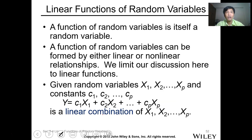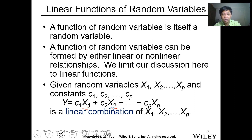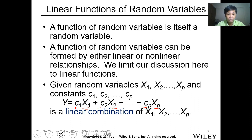Now, for a linear function of multiple random variables — when we say linear function, the power of each variable is 1 and it has a constant. This applies for all variables.